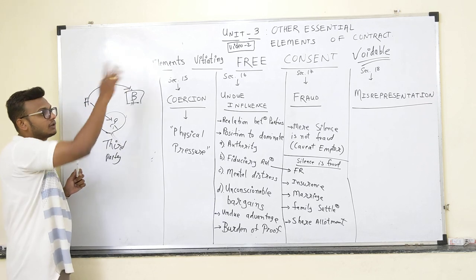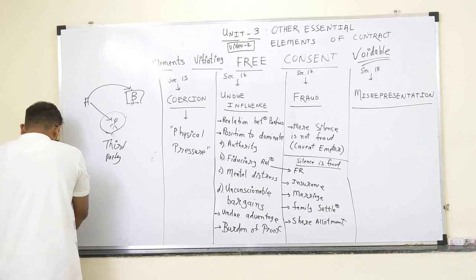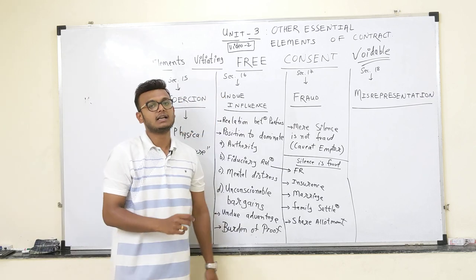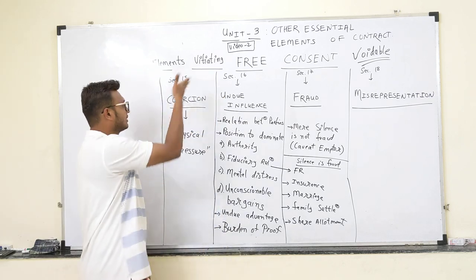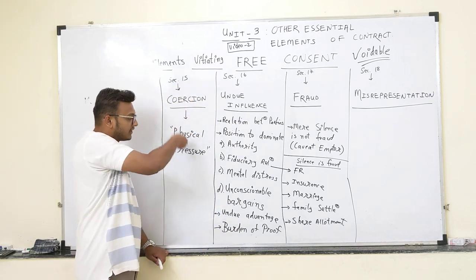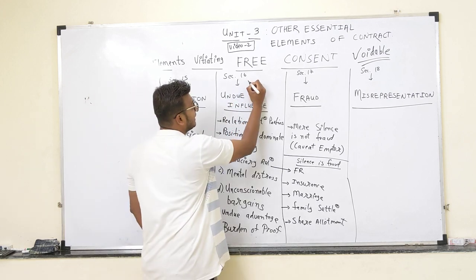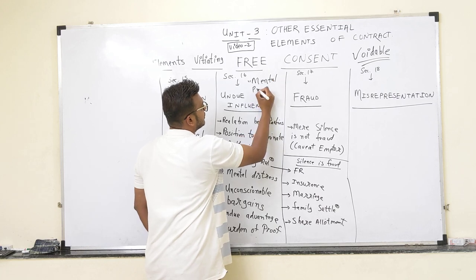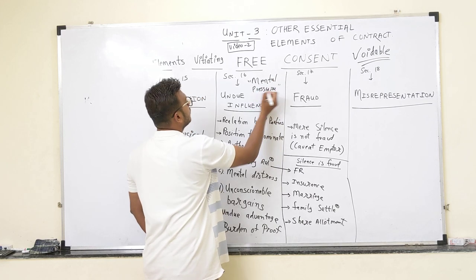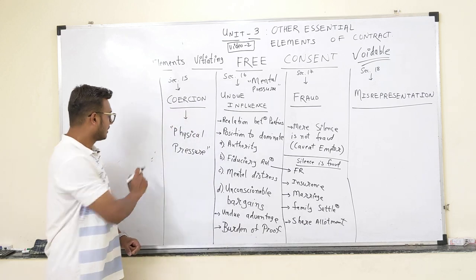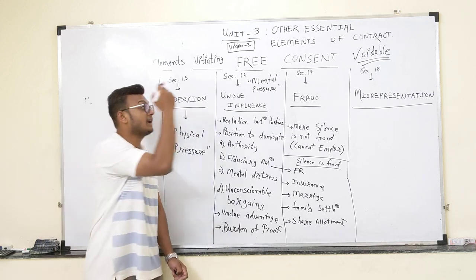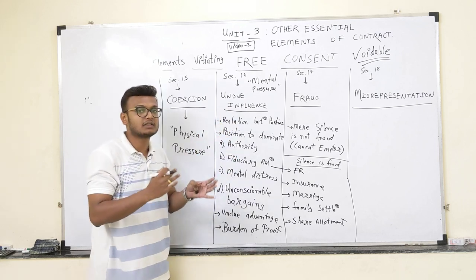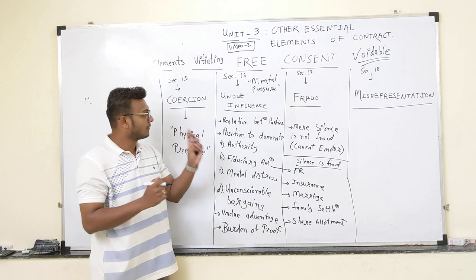Going forward to undue influence, section 16. What is the difference between coercion and undue influence? Coercion is physical pressure; undue influence is mental pressure — mental harassment. This is the main difference. You can give mental pressure when two parties are in a close relationship.